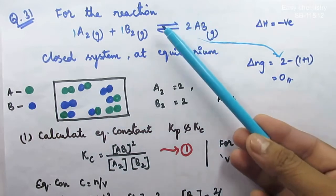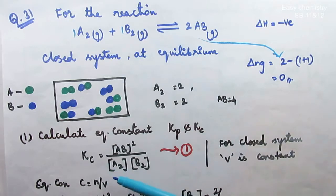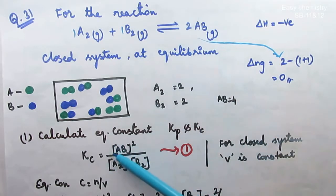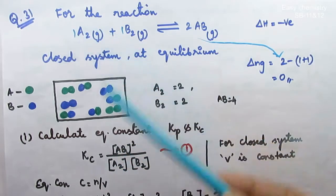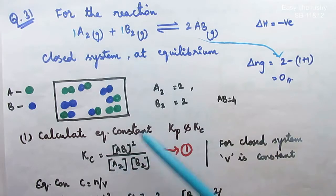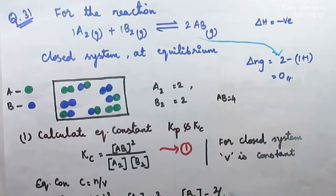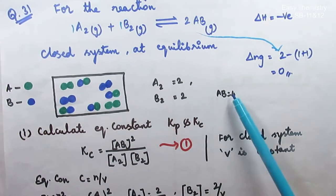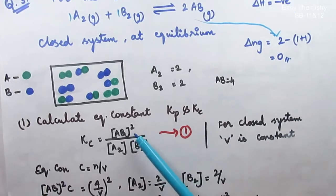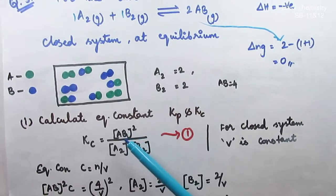Let's first calculate using the chemical equation. Kc — we know — is the concentration of products over reactants. So Kc equals concentration of AB squared, divided by concentration of A₂ times concentration of B₂. The question asks us to calculate equilibrium constants Kp and Kc. AB is 4, so let's substitute.